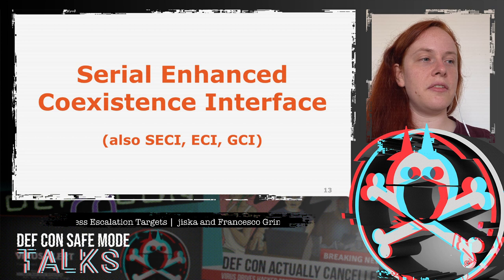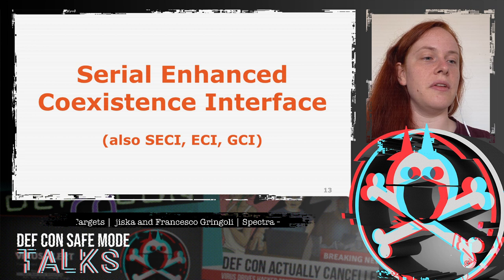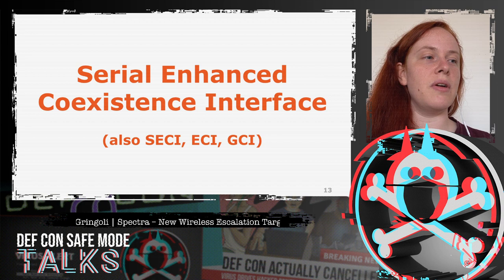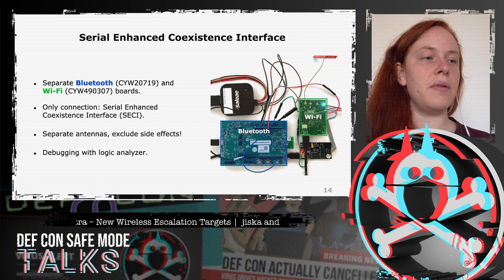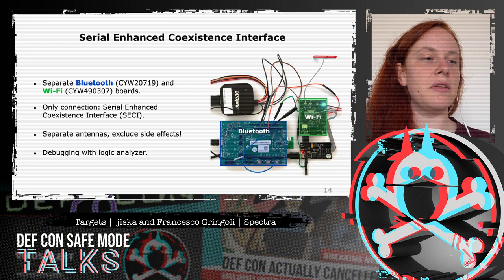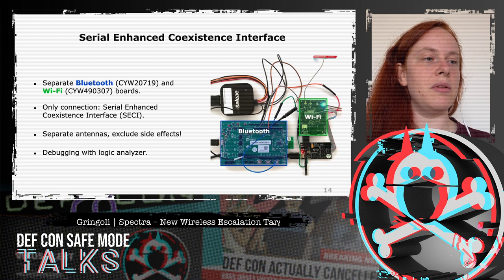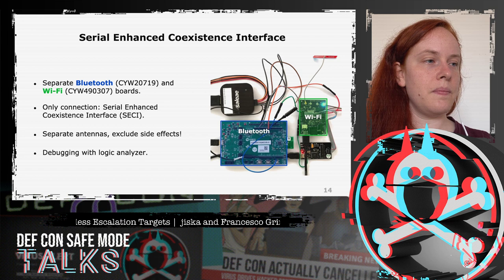To understand the attacks, we need to understand the Serial Enhanced Coexistence Interface (SECI), also called ECI or GCI (Global/Generic Coexistence Interface). The best way to study it is to separate the Bluetooth and Wi-Fi boards; using Cypress boards with no shared antenna, the only connection is the SECI, which can be intercepted. This allows observation of every signal sent between the two boards.